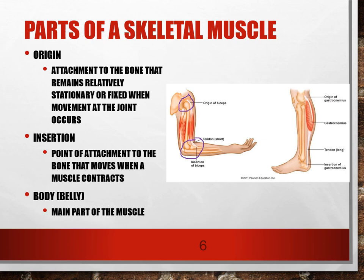The belly of the muscle is the thickest part — that would be the belly of our biceps. Another example is the calf muscle or the gastrocnemius. The gastrocnemius origin is on the posterior distal end of the femur, and the insertion point, by the Achilles tendon, is all the way down on the heel or the calcaneus.